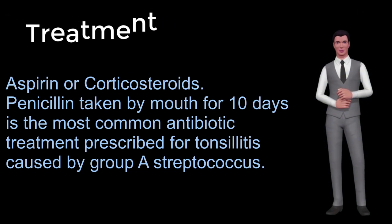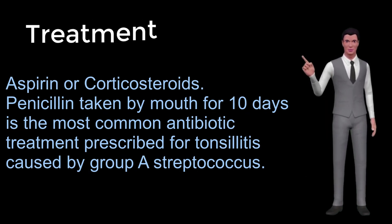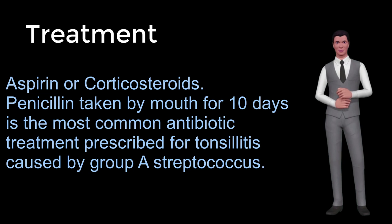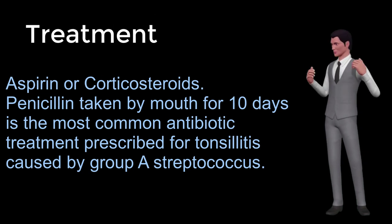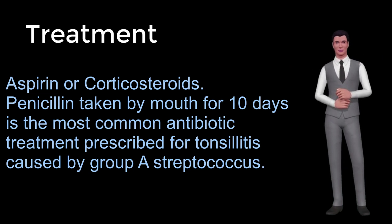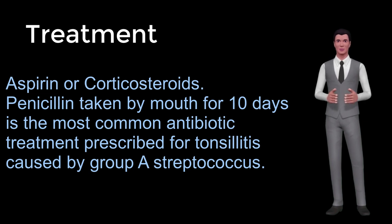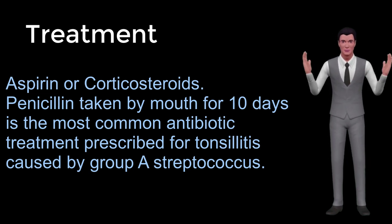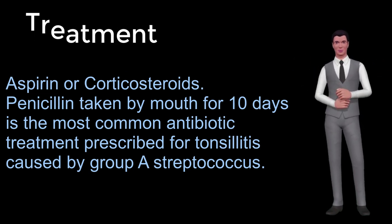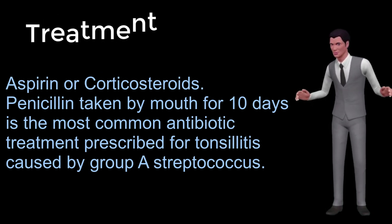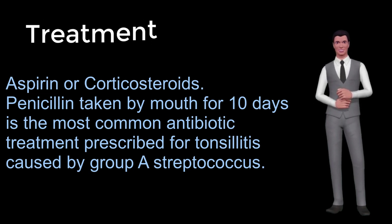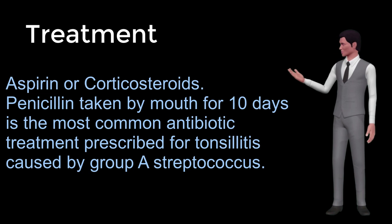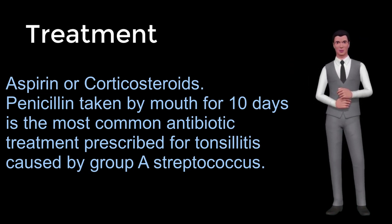The management of rheumatic fever is directed toward the reduction of inflammation with anti-inflammatory medications such as aspirin or corticosteroids. Individuals with positive cultures for strep throat should also be treated with antibiotics. Penicillin taken by mouth for 10 days is the most common antibiotic treatment prescribed for tonsillitis caused by group A streptococcus. Tonsillectomy may also be used for prevention of recurrent tonsillar infections. About 33 million people are affected by rheumatic heart disease, with an additional 47 million having asymptomatic damage to their heart valves. As of 2010, globally it resulted in 345,000 deaths, down from 463,000 in 1990.